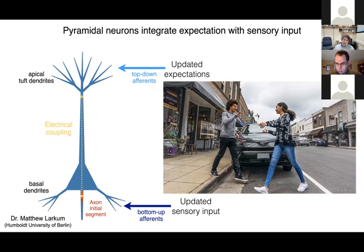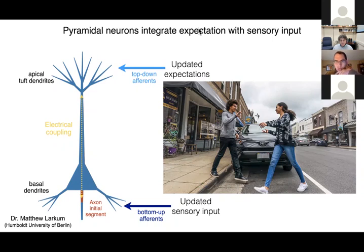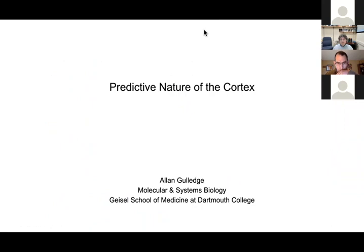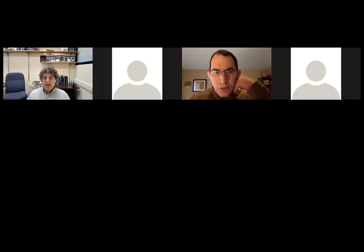I hope that through this talk you've gained an appreciation for how the neocortex allows for this constant updating of expectation, and how important those expectations are in driving our understanding of the world and our decisions about what to do based on that perception. With that, I'll stop there and turn it back to Dan.